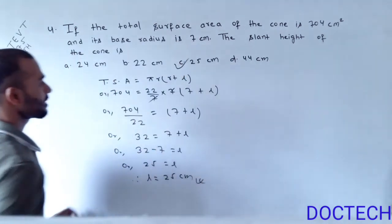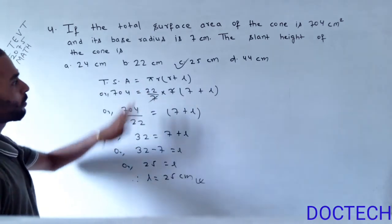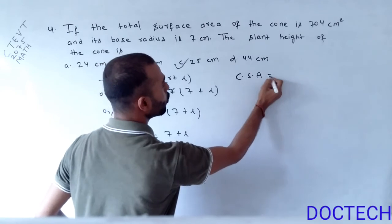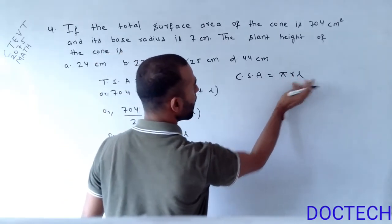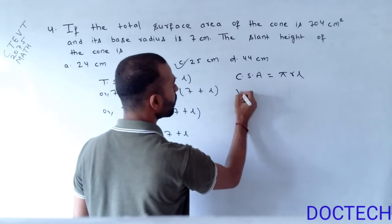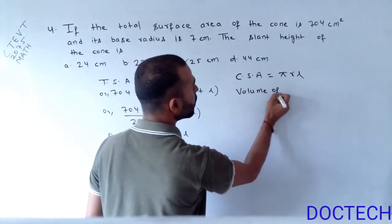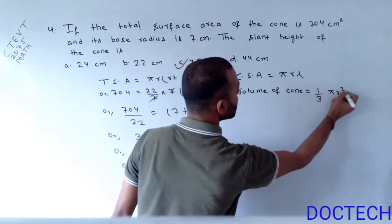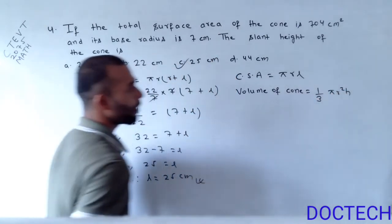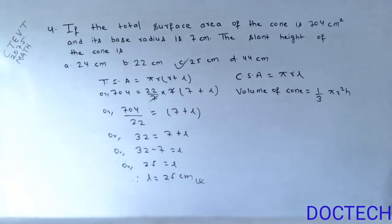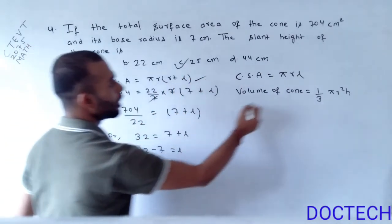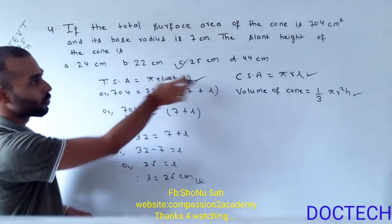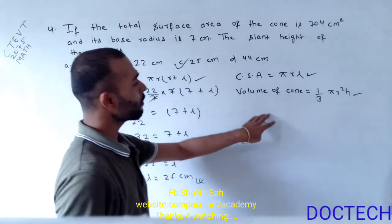The total surface area of the cone is pi R (R plus L). The curved surface area of the cone is pi R L. And the volume of the cone is 1 by 3 times pi times R squared times h. You need to learn these three formulas to solve the numericals of a cone.